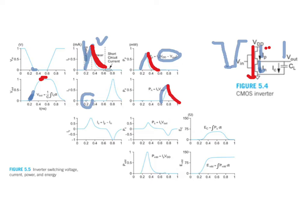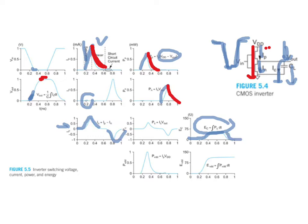If we observe what is occurring at the capacitive load: power is consumed — there is an input current to the capacitor during the high-to-low transition at the logic gate — whereas power is sent out from the capacitor to ground during the low-to-high transition. And if we integrate the power over time, we get the total energy stored in the capacitor, which is given by this amount. The energy is stored during the high-to-low transition and when power flows out of the capacitor to ground, the energy is lost to ground during the low-to-high transition.